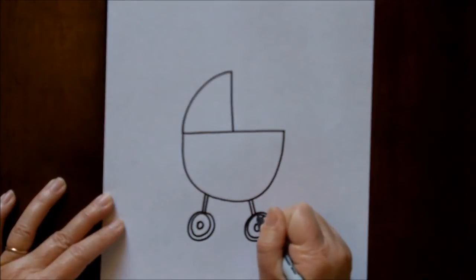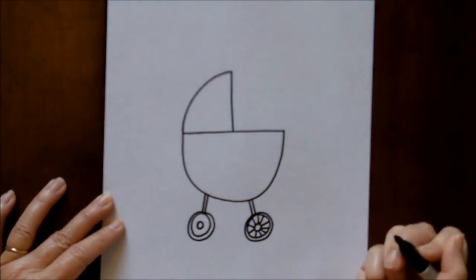Now we're going to draw straight little lines from the inner circle to the outer circle. Those are going to be the little spokes.